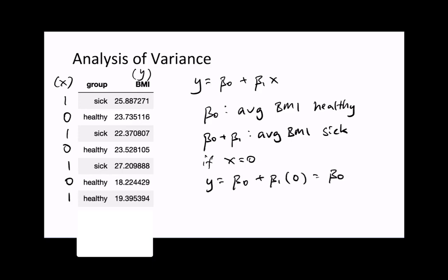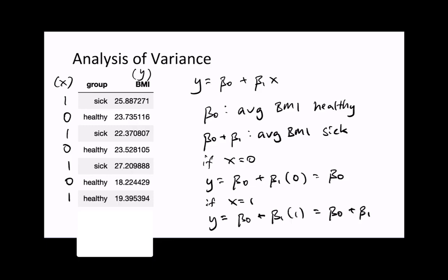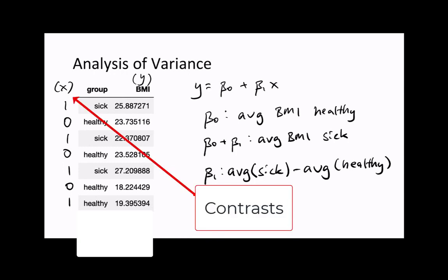When x equals 0, you will retrieve the average body mass index for the healthy patients, and when x equals 1, you will retrieve the average body mass index for the sick patients. This also implies that the difference between these two averages is given by beta1, the quantity we're actually interested in. The process of encoding these groups as 0s and 1s is typically referred to as contrasts, because we're interested in comparing or contrasting these two groups.